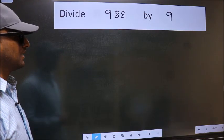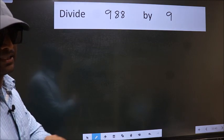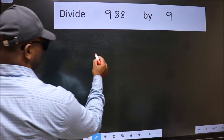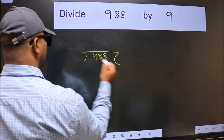Divide 9.88 by 9. To do this division, we should frame it in this way. 9.88 here and 9 here.